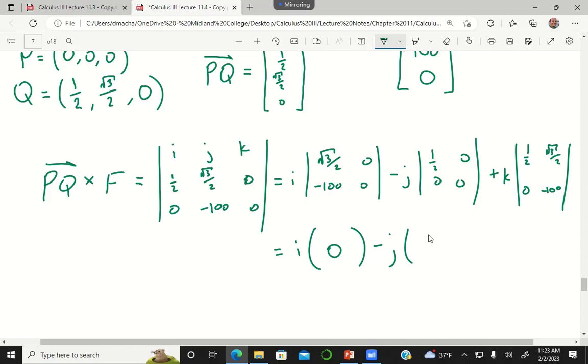Zero, because that determinant is half times zero minus zero times zero. And then plus k times negative 50, because it's half times negative 100 minus zero times root three over two.